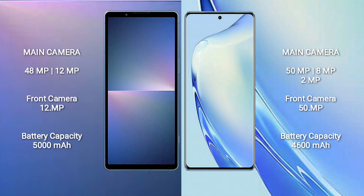The Sony Xperia 5 Mark 5 features a rear dual-camera setup of 48MP plus 12MP, with a 12MP front camera. The VIVO V27 features a rear triple-camera setup of 50MP plus 8MP plus 2MP, with a 50MP front camera.